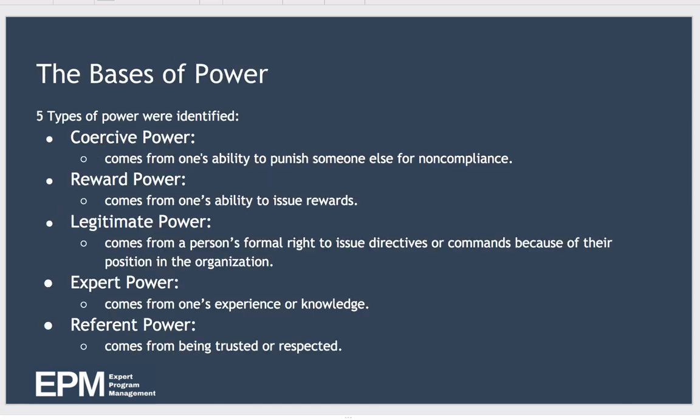The five types of power they identified are: coercive power, which comes from one's ability to punish someone else for non-compliance with instructions — for example, through fear of losing their job or their annual bonus, you can get someone to do something.